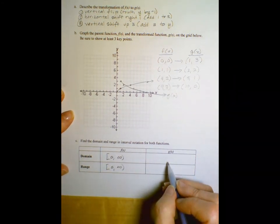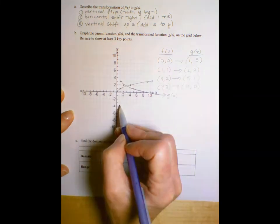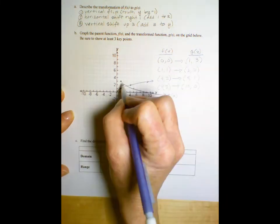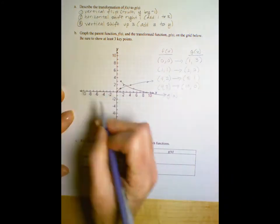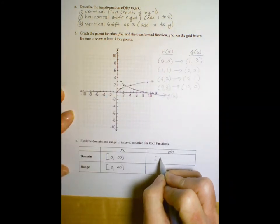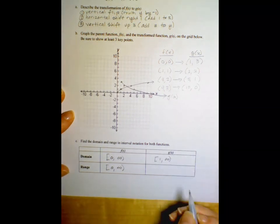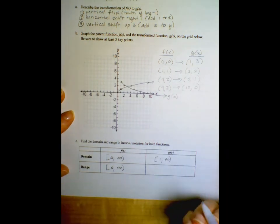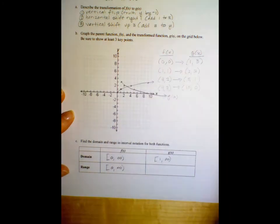What about the transformed function? How low do our x's go now? Well, we can see it. We do not go below one. We do get to one, that point one, three, but no x values are below that. So from one and then on to positive infinity. What about our y values? What's the lowest y value? Here on the parent, the lowest was zero, and then it goes on and on and on up.